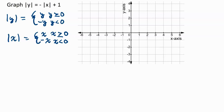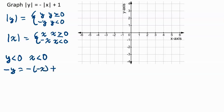That means we have several cases. The first case is if y is less than 0 and x is less than 0. That means negative y is equal to the negative of negative x plus 1, because both y and x are less than 0. That gives us negative y equals positive x plus 1, which means y equals negative x minus 1.